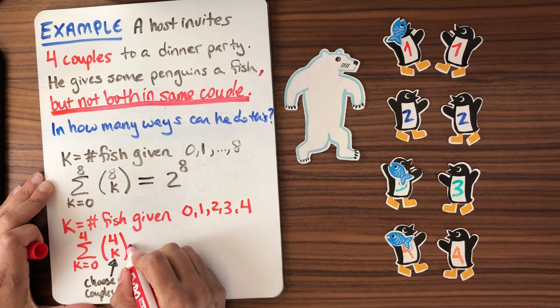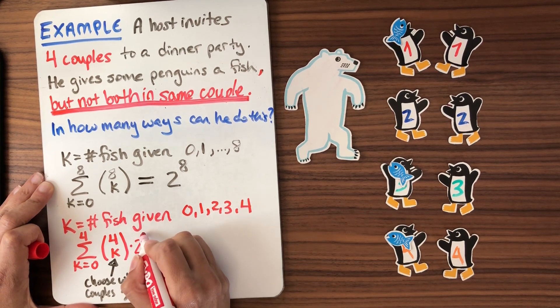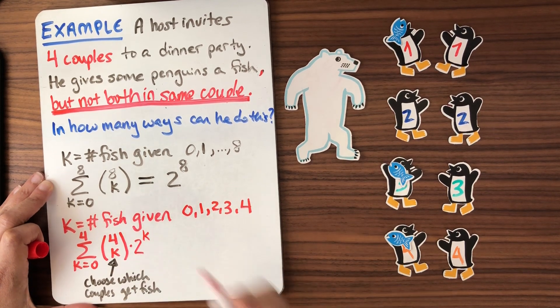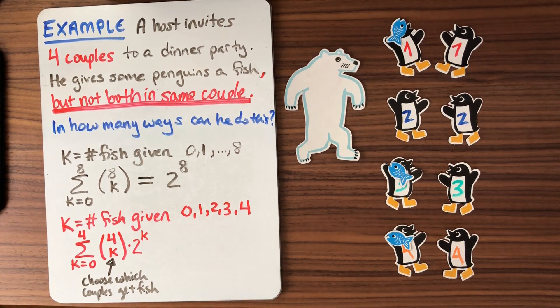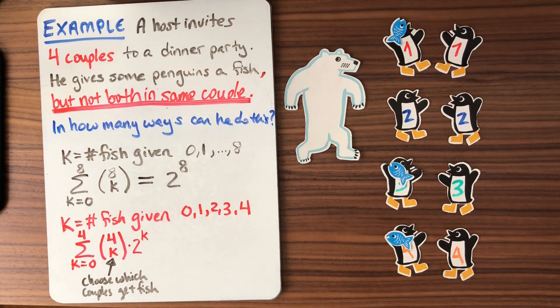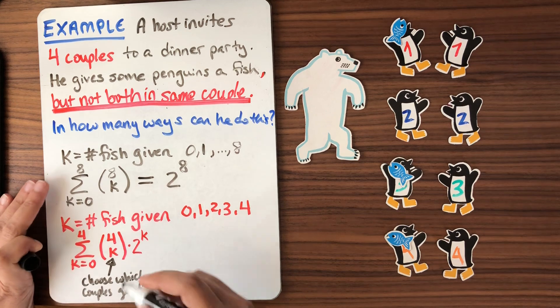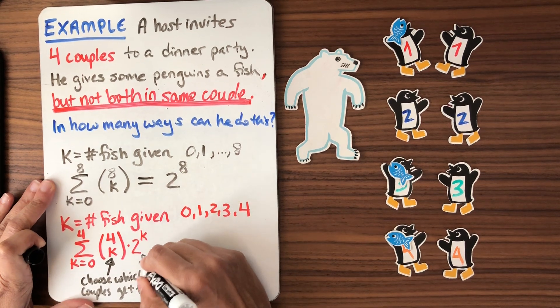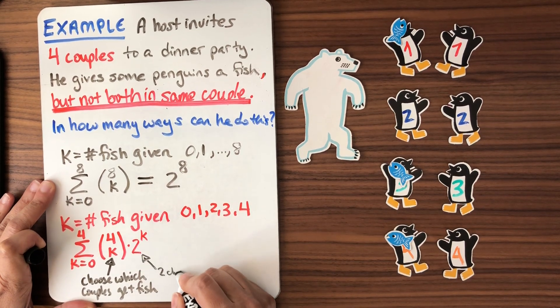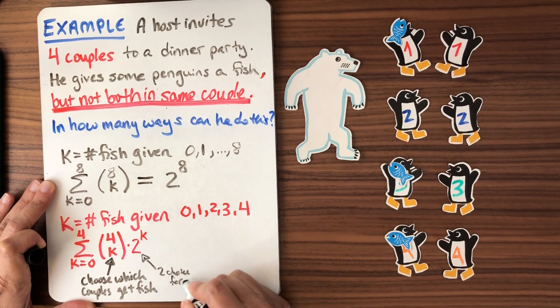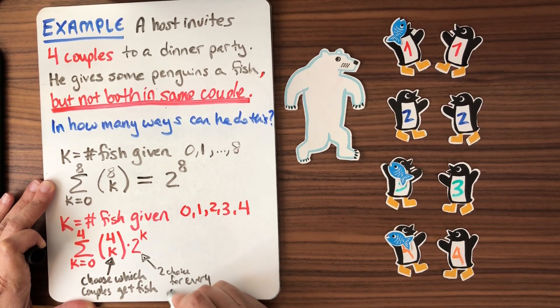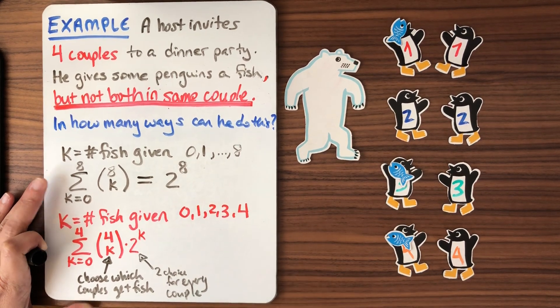So he's going to have two choices for every couple that he's chosen. So it's two to the K. Again, that K is because that's how many couples get the fish. So there are two choices for every couple who gets fish.